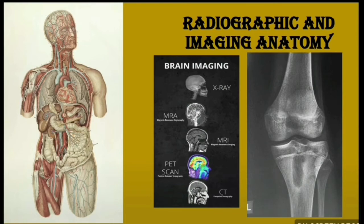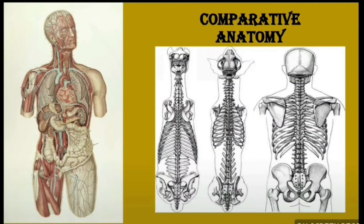Comparative anatomy is a comparison between different species and the human body. As seen in the image, different animals are compared alongside human anatomy.